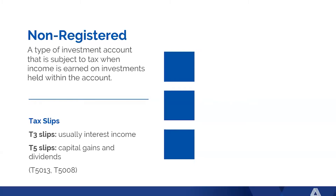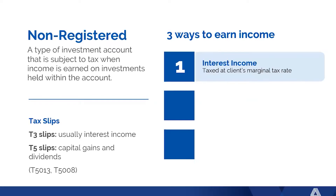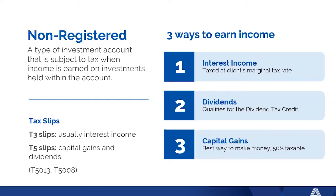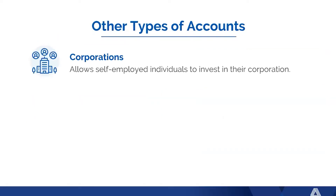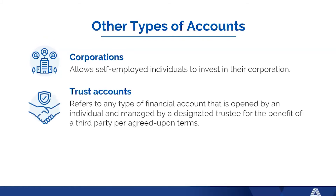Your clients will receive tax slips at the end of the year in a non-registered account: T3 slips for interest income, T5 slips for capital gains and dividends, and T5013, T5008. There are three ways to earn income: interest income taxed at the client's marginal rate, dividends which qualify for the dividend tax credit, and capital gains which are the best — you're only taxed on 50%. Other account types include corporations for self-employed clients, trust accounts designed for a third party such as spousal or testamentary trusts, and guaranteed annuities — financial products offering a guaranteed income stream, usually for retirees.